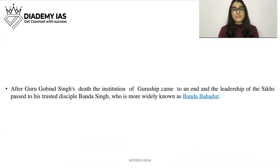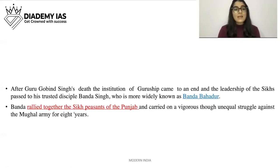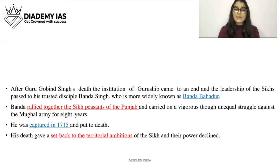After Guru Gobind Singh's death, the leadership of the Sikhs passed to his trusted disciple Banda Singh, more widely known as Banda Bahadur. Banda rallied together the Sikh peasants of Punjab and carried on a vigorous though unequal struggle against the Mughal army for eight years. He was captured in 1715 and put to death. His death gave a setback to the territorial ambitions of the Sikhs and their power declined.